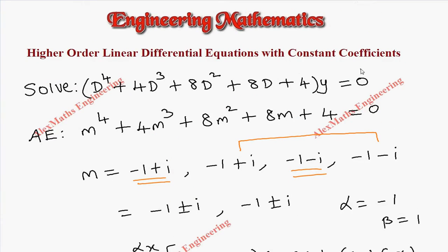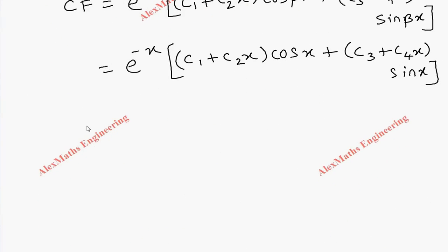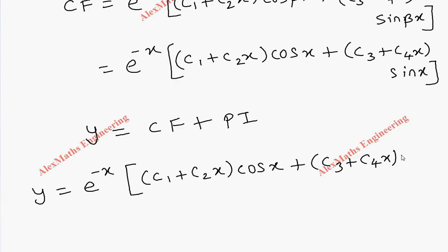Since the other side is 0 in the given equation, there is no particular integral. So y is the complete solution, which is CF + PI. We get y = e^(-x)[(c1 + c2x)cos x + (c3 + c4x)sin x].